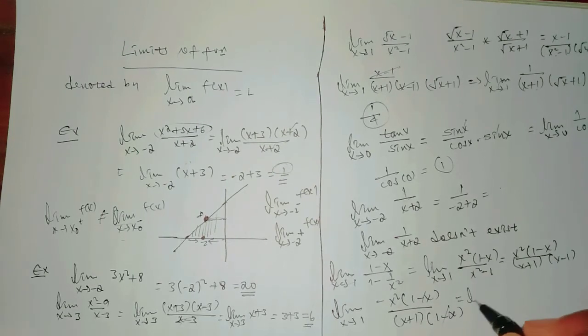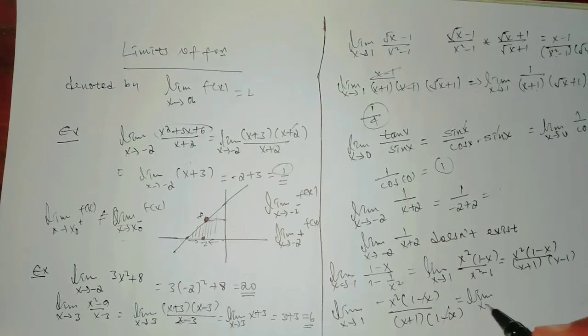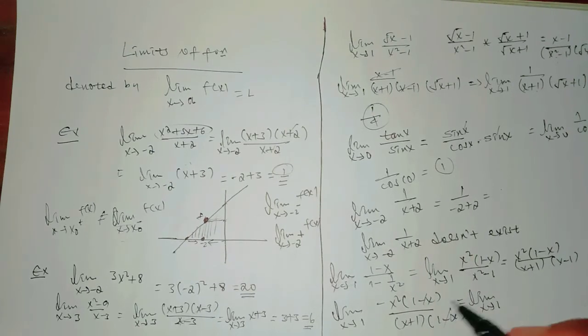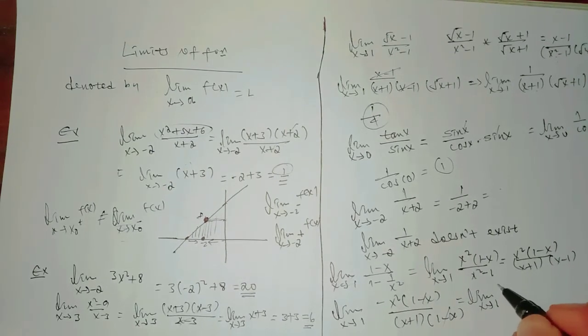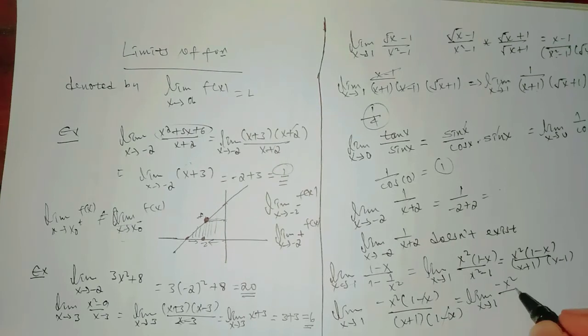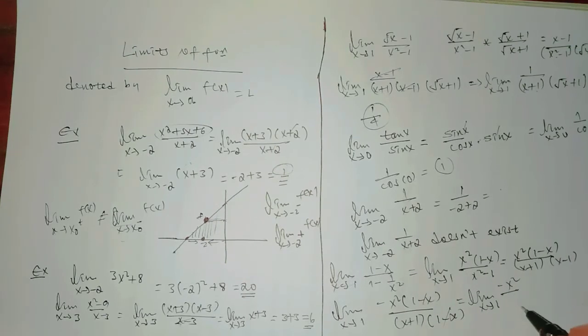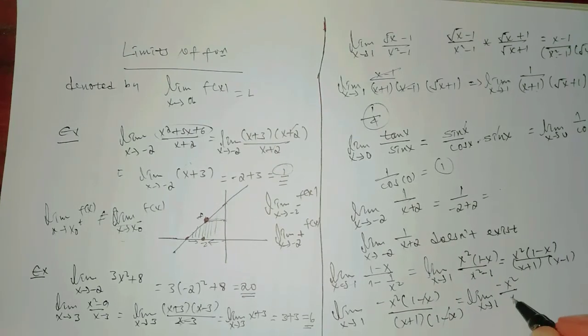Substituting x equals 1: negative (1)² over (1 + 1) equals negative 1 over 2. So the limit equals negative 1/2.